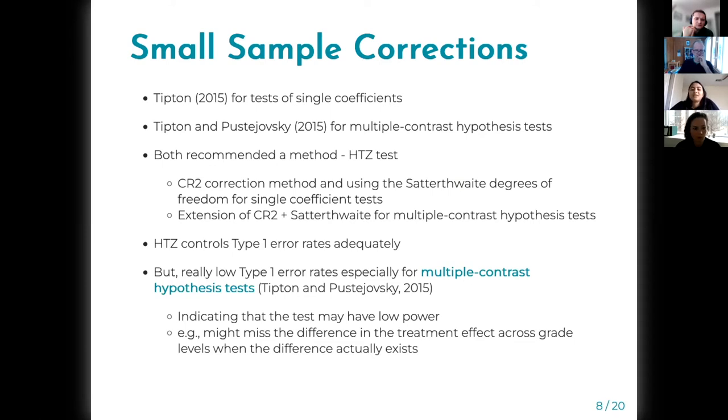Tipton 2015 and Tipton and Pusyevsky 2015 examined small sample correction methods for single coefficient tests and multiple contrast hypothesis tests. Both papers recommended a method called HTZ test, which is the same as CR2 correction which corrects for leverage, and to use the Satterthwaite degrees of freedom for single coefficients and an extension of that for multiple contrast hypothesis tests.